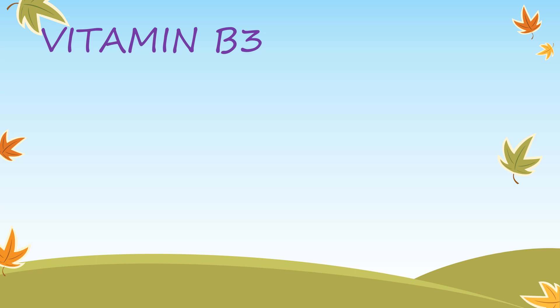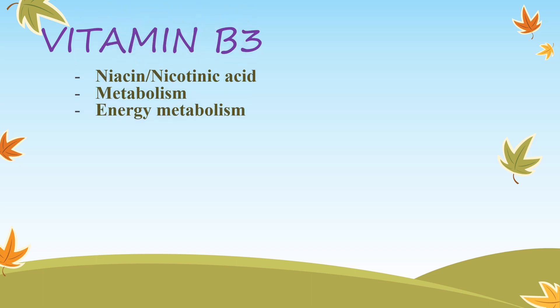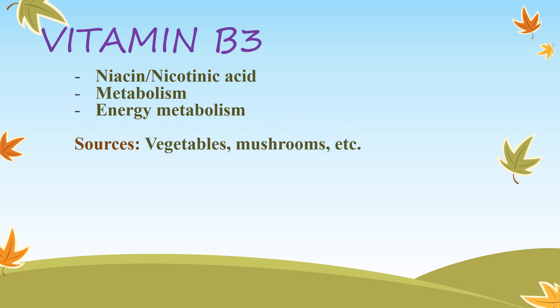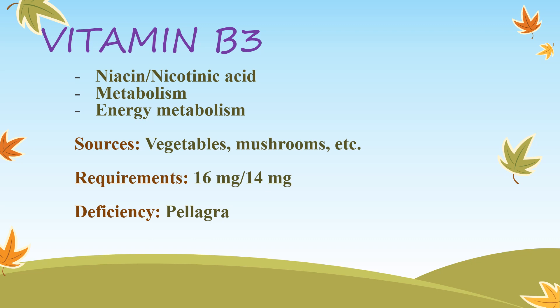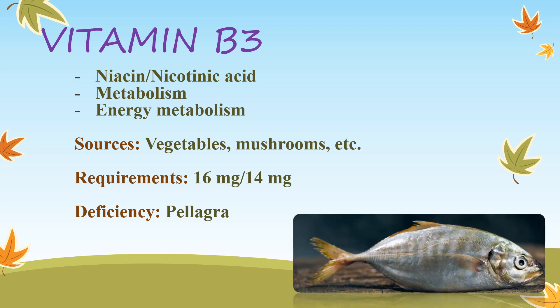Vitamin B3 — niacin or nicotinic acid. Tryptophan is a precursor of niacin, with the exception of cats and minks. It is a component of NAD and NADP, involved in carbohydrate, protein, and lipid metabolism. Functions: part of an enzyme needed for energy metabolism; important for the nervous system, digestive system, and skin health. Sources: meat, fish, eggs, many vegetables, mushrooms, and tree nuts. Requirements: 16 mg for men, 14 mg for women. Deficiency causes pellagra, with symptoms of dermatitis, dementia, and diarrhea. Overdose of vitamin B3 — greater than 2g per day — leads to liver damage and other problems.